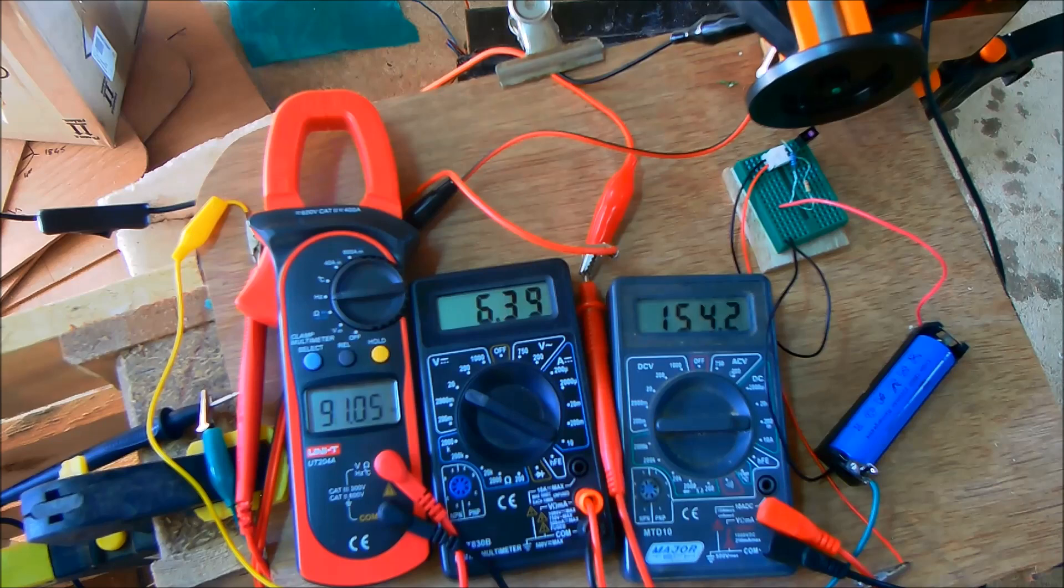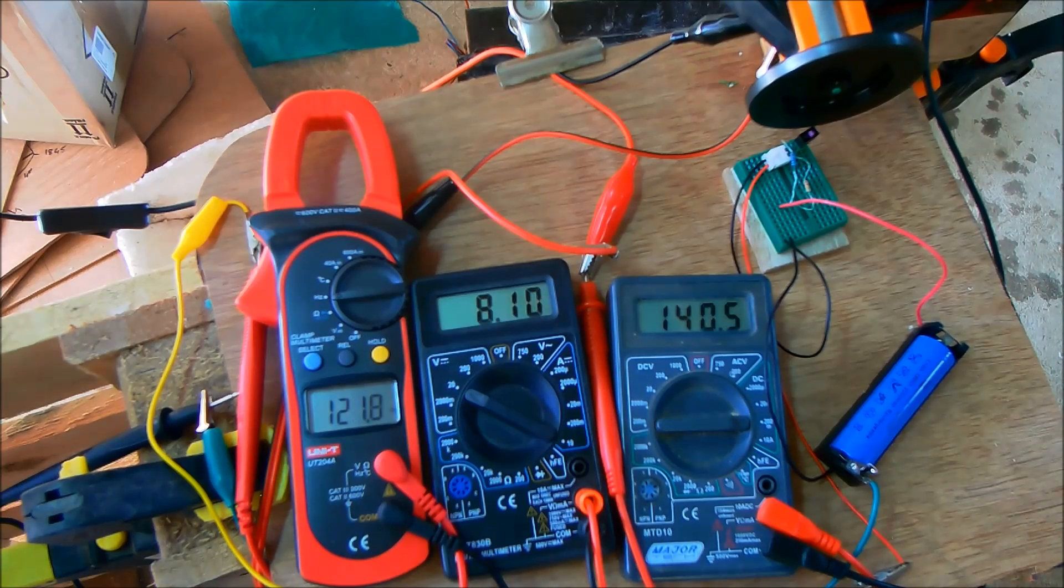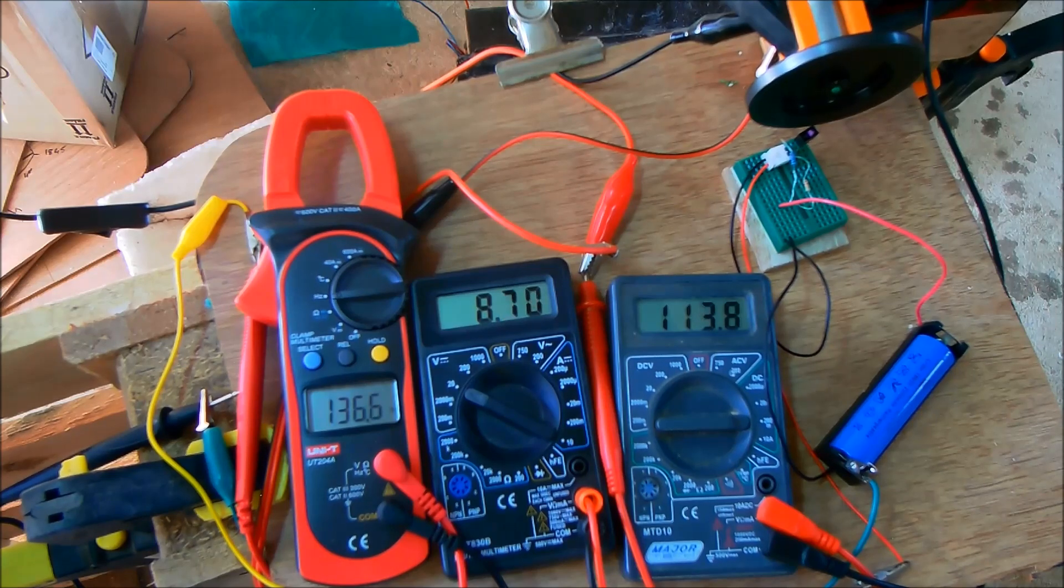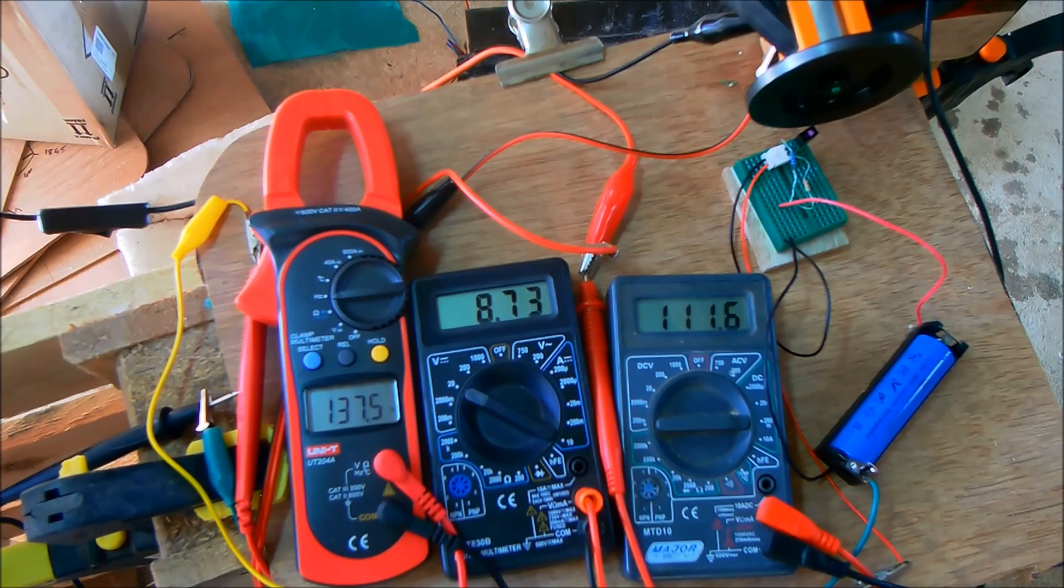Notice how the voltage first drops off and then starts climbing again as the motor speeds up. That's because of the initial inertia of the flywheel presenting torque and allowing more current to flow at the lower RPM.